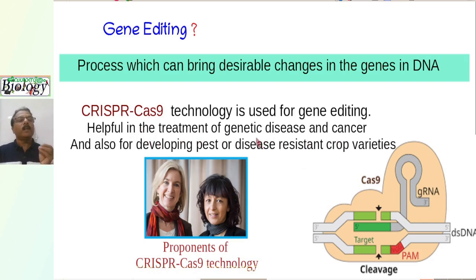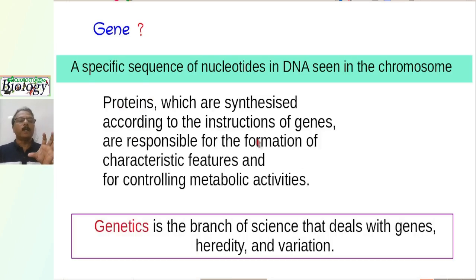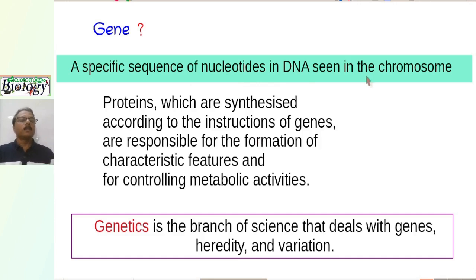CRISPR-Cas technology may be helpful in treatment of genetic diseases and cancer, and also for developing pest-resistant or disease-resistant crops. A gene is a specific part of DNA — a specific sequence of nucleotides in DNA. DNA is seen in chromosomes.